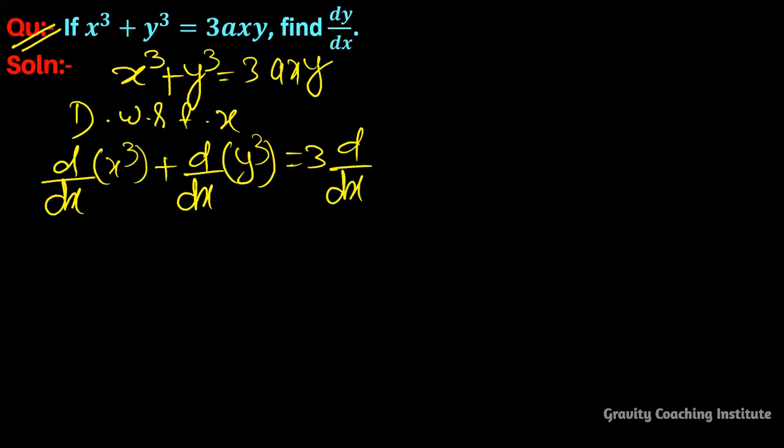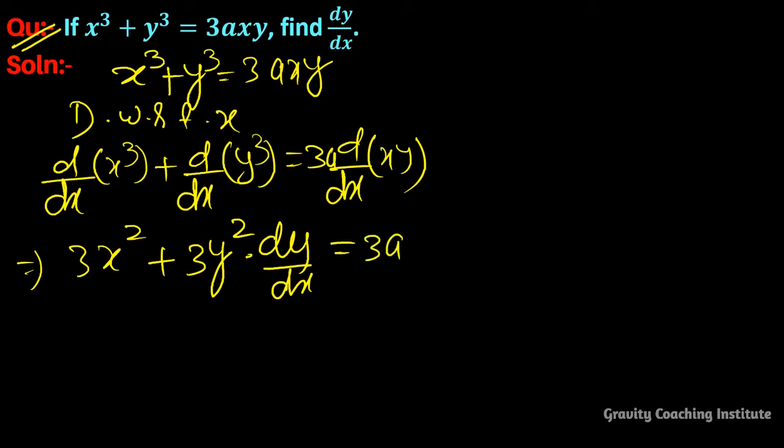Differentiating x³ gives 3x². For y³, we get 3y²(dy/dx). For 3axy, we use the product rule: 3a times (x·dy/dx + y·dx/dx).